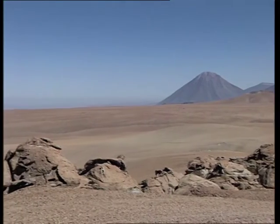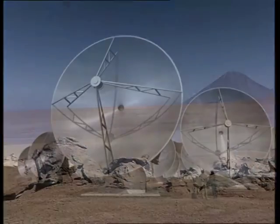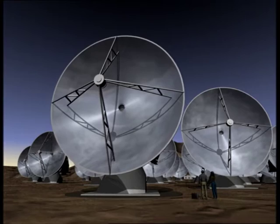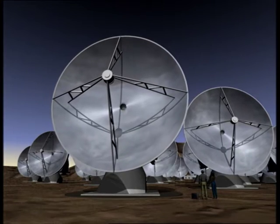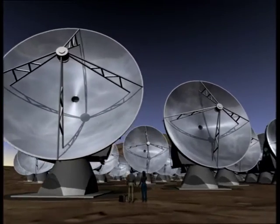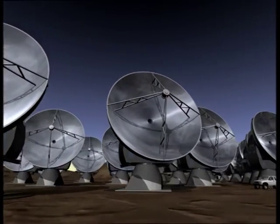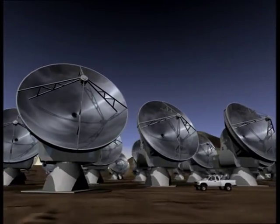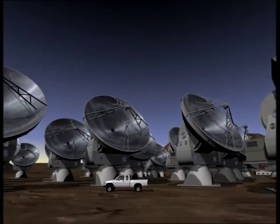Known by the acronym of ALMA, the array will be composed of 64 12-meter submillimeter quality antennas. They will work together, functioning as a single, giant antenna. The baselines will extend up to 16 kilometers to make high-resolution images.